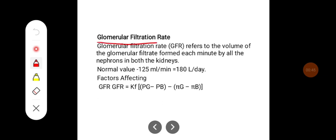Glomerular filtration rate (GFR) refers to the volume of glomerular filtrate formed each minute by all the nephrons in both kidneys. The normal value of GFR is around 125 ml per minute or 180 liters per day.